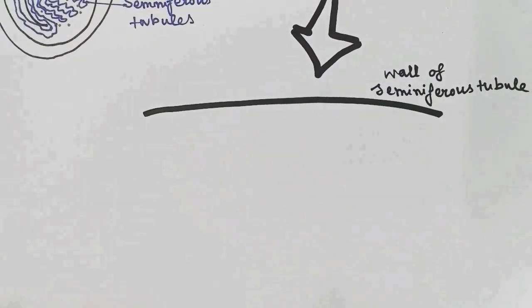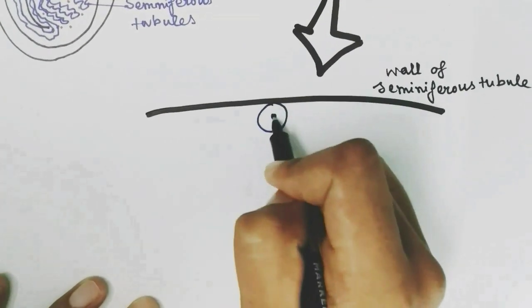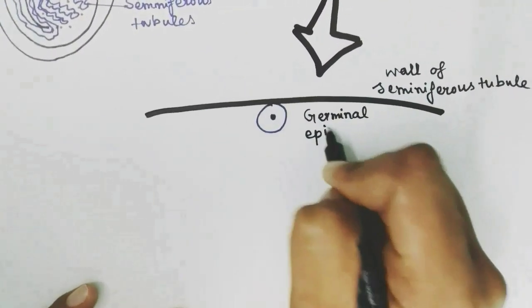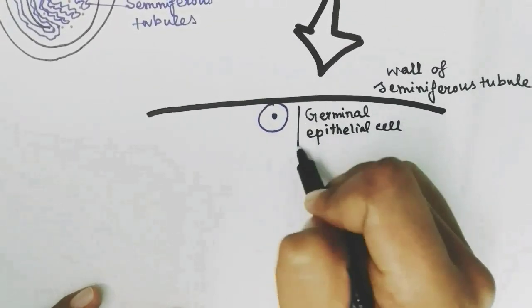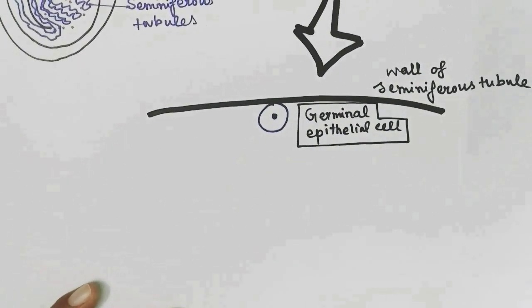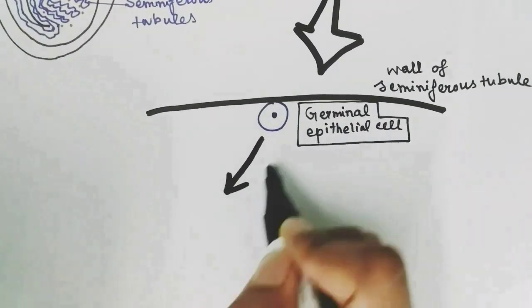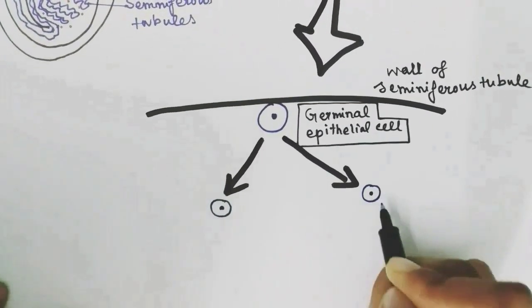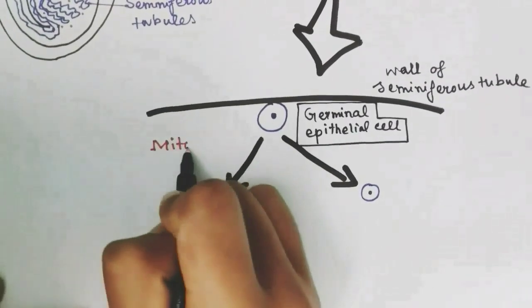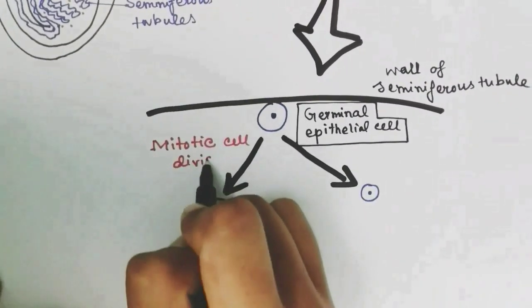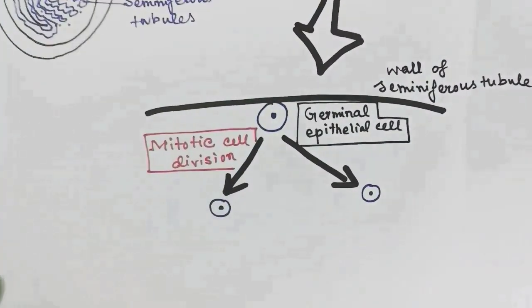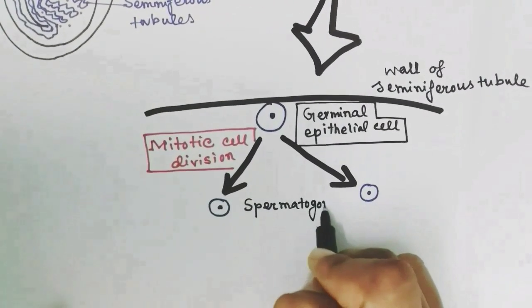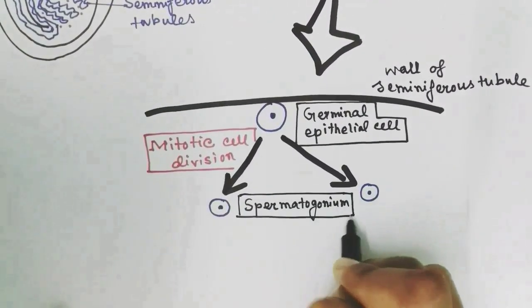The first cell from which spermatogenesis starts is the germinal epithelial cell. These germinal epithelial cells are multiplied by mitotic cell division and form two types of cells — one remains as a germinal epithelial cell, and the other proceeds for spermatogenesis and is called a spermatogonium cell.